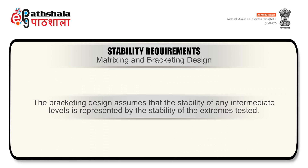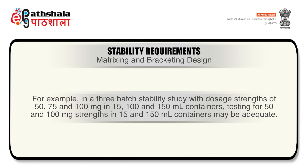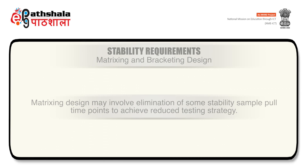Matrixing can cover reduced testing when more than one variable is being evaluated. For example, a one-half reduction in time points eliminates one in every two time points from a full design, and a one-third reduction eliminates one in every three time points. The bracketing design assumes that the stability of any intermediate level is represented by the stability of the extremes tested. Where a range of strengths is to be tested, bracketing is applicable if the strengths are identical or very closely related. For example, in a three-batch stability study with dosage strengths of 50, 75 and 100 mg in 15, 100 and 150 mL containers. Matrixing design may involve elimination of some stability sample pull time points to achieve a reduced testing strategy.